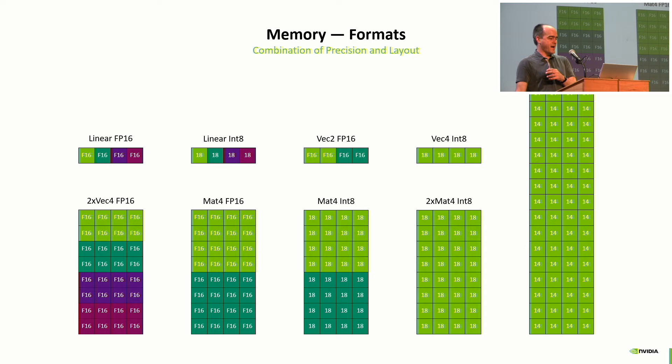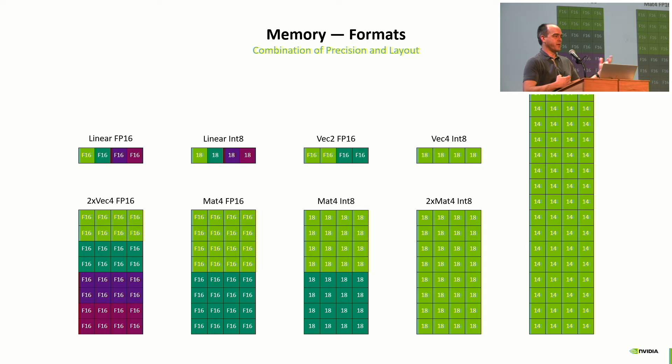In the Pascal architecture, INT8 was introduced, reducing memory use by a quarter and potentially increasing performance by 4x. Then we have vectorized formats, and more recently, tensor cores — matrix formats where you perform an 8×8 matrix multiplication across all threads together.